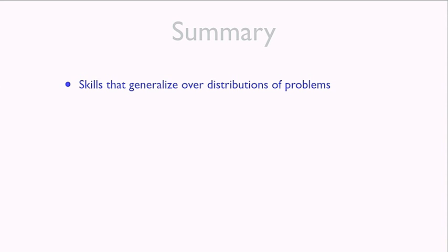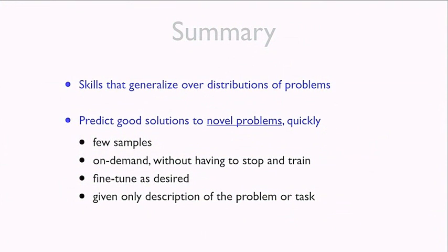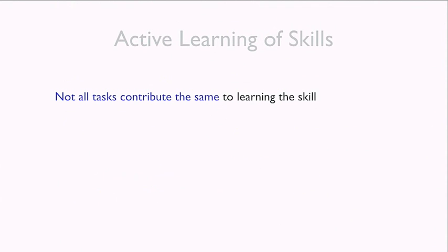There's a catch: when training the skill we selected sample tasks to practice at random, which is not the best approach. In the second part of this talk I'll explain how to solve this limitation. To recap so far: skills are procedures that allow us to generalize over distributions of problems, making pretty good predictions for novel problems without solving them from scratch, from very few training examples.